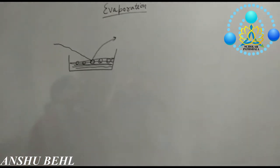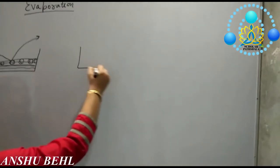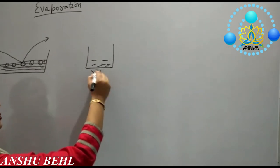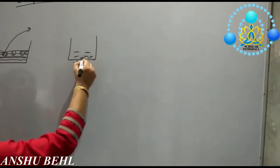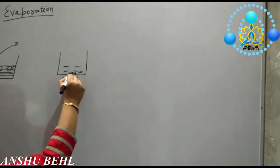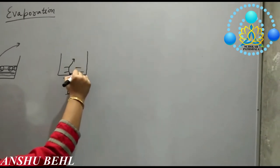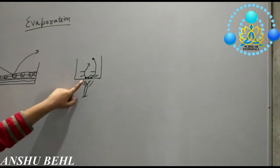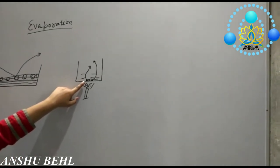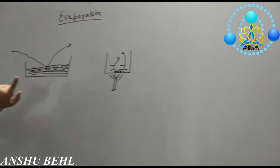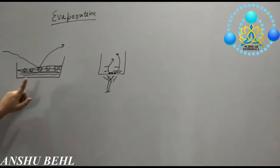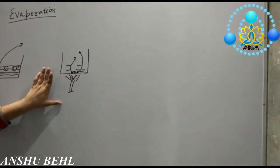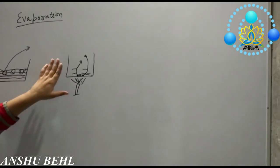How is evaporation different from boiling? In boiling, we heat water in a container and water molecules from the bulk, from the bottom, leave and come to the surface. So boiling is a bulk phenomenon in which particles move from the bulk. Evaporation can occur at any temperature below the boiling point, but boiling occurs at a specified temperature which we call the boiling point.